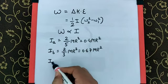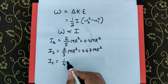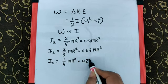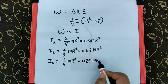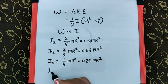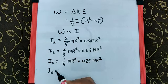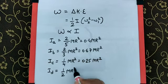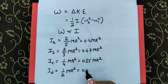For the circular disk about the diameter, it is 1/4 MR² = 0.25 MR². For the circular hoop, it is 1/2 MR² = 0.5 MR².